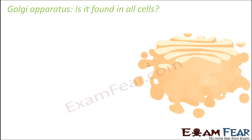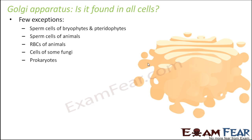The question is whether Golgi apparatus is found in all cells. In general they are found in all plant and animal cells, but there are a few exceptions: sperm cells of bryophytes and pteridophytes, sperm cells of animals, red blood cells of animals, and cells of some fungi and prokaryotes — these are cells where Golgi bodies are not found.